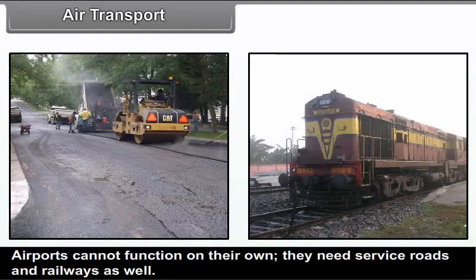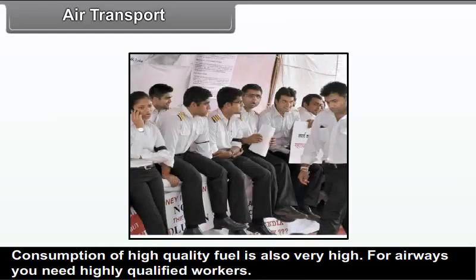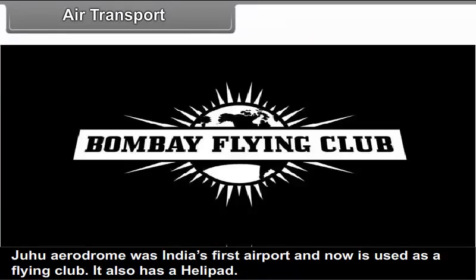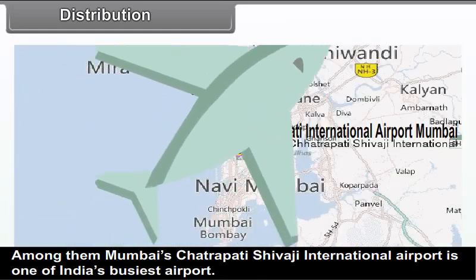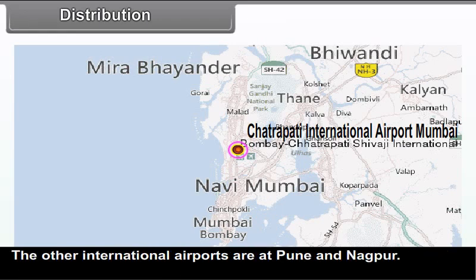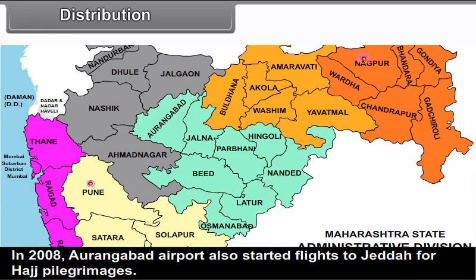Tourism also develops if air transportation is well developed. Air transportation has some disadvantages: it is very expensive so the common man cannot afford it, and it has a very low carrying capacity so bulky and heavy products cannot be airlifted. Well-equipped and very secure airports are needed, making construction costs very high. Airports cannot function on their own — they need service roads and railways. Consumption of high-quality fuel is very high, and highly qualified workers are required.